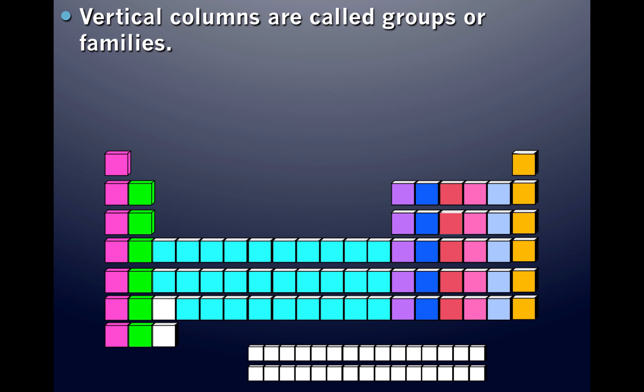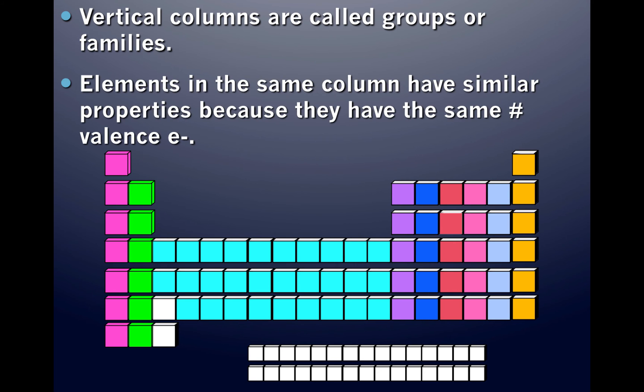The periodic table is also made up of vertical columns, which are called groups or families. Elements in the same column — the same group or family — have similar properties because they have the same number of valence electrons.